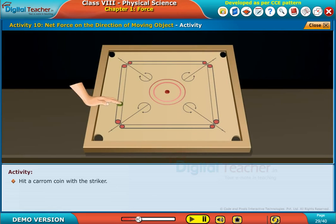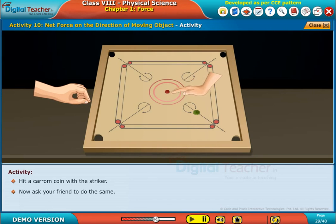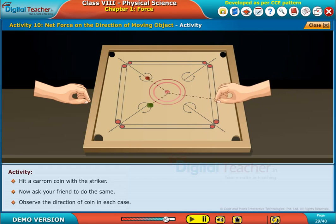Hit a carom coin with a striker. Now, ask your friend to do the same. Observe the direction of coin in each case.